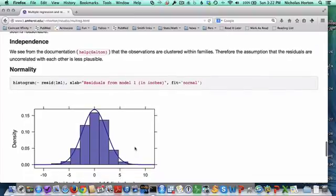Independence is a bigger issue here. If we look at the documentation for Help Galton, we see that the observations are actually clustered within families. We have multiple kids with the same mom. As a result, the assumption the residuals are uncorrelated with each other is less plausible. As is often the case for the independence assumption, we need to actually know something about the study to assess it.